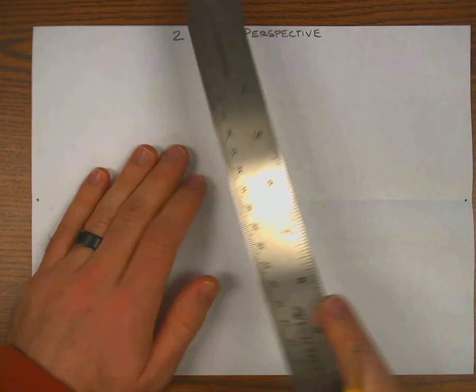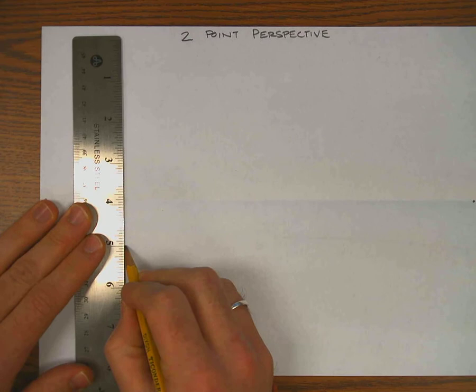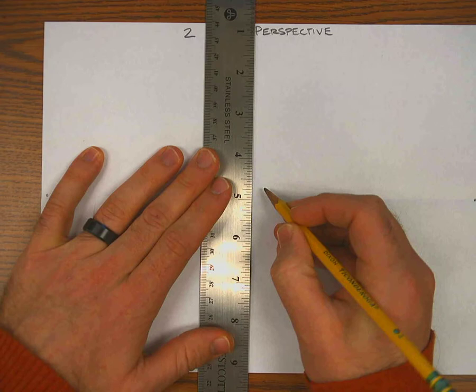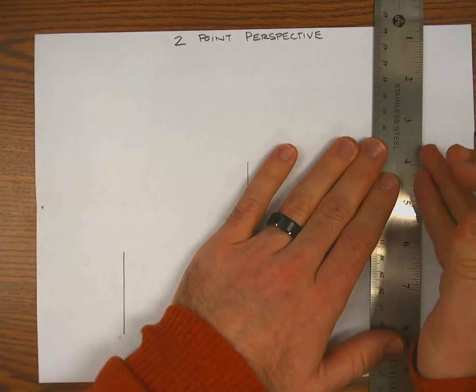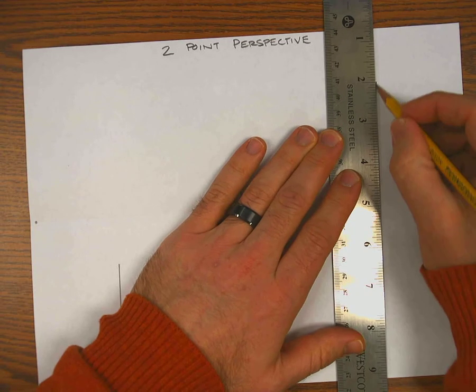And then I'm going to draw three vertical lines. I'll make them about two inches long. One in the bottom left, one across the horizon line in the middle, and one in the top right.